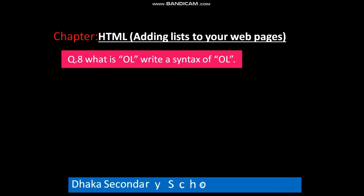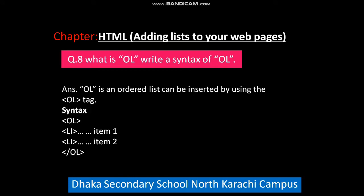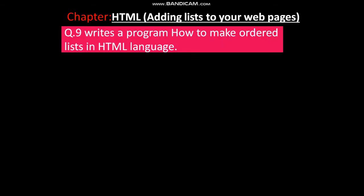What is ol? OL is an ordered list. It can be inserted by using the ol tag. The syntax is: ol, then li item 1, li item 2, and close the ol tag. Now let's look at the program — how to make an ordered list in HTML language.